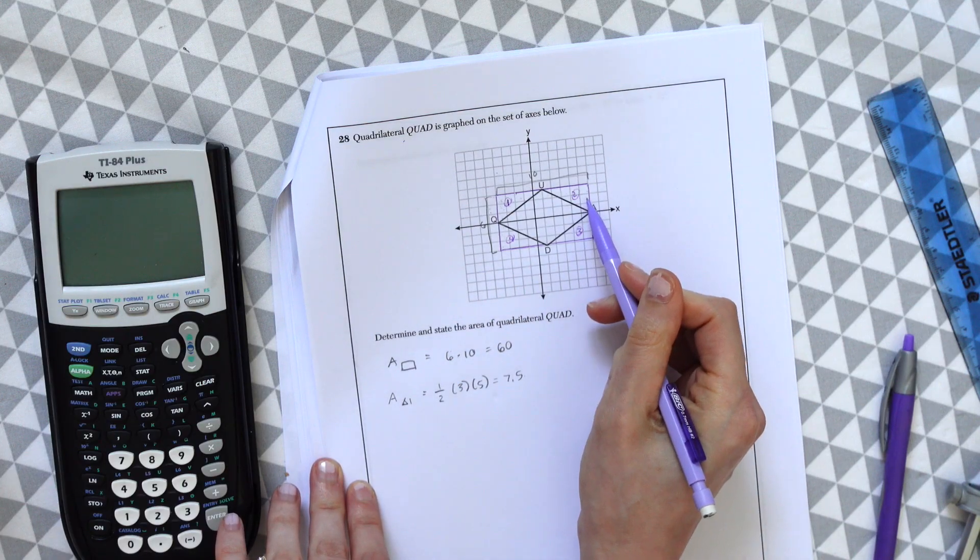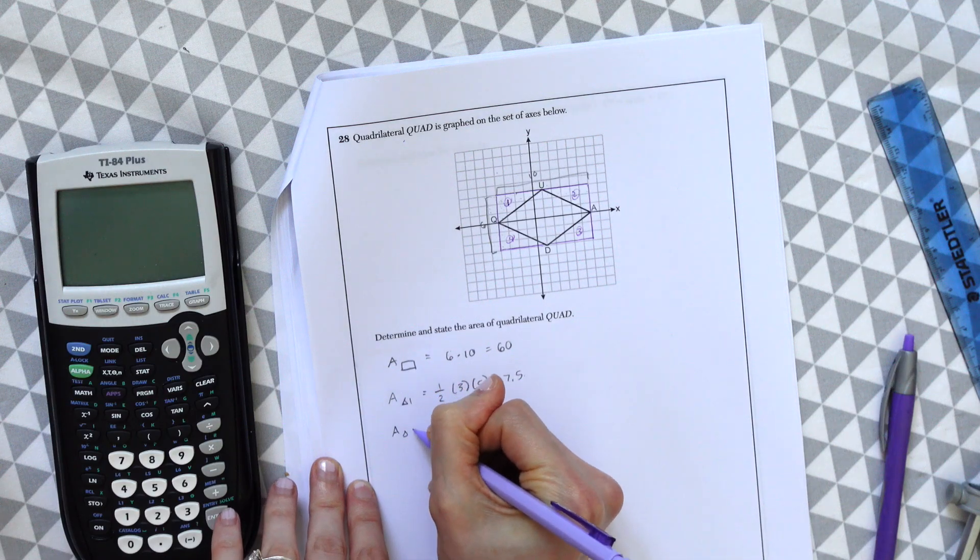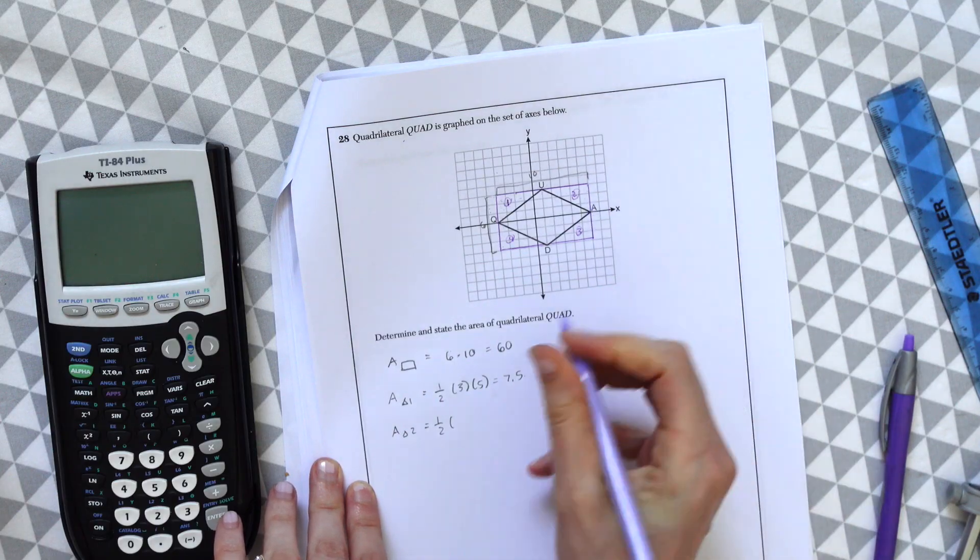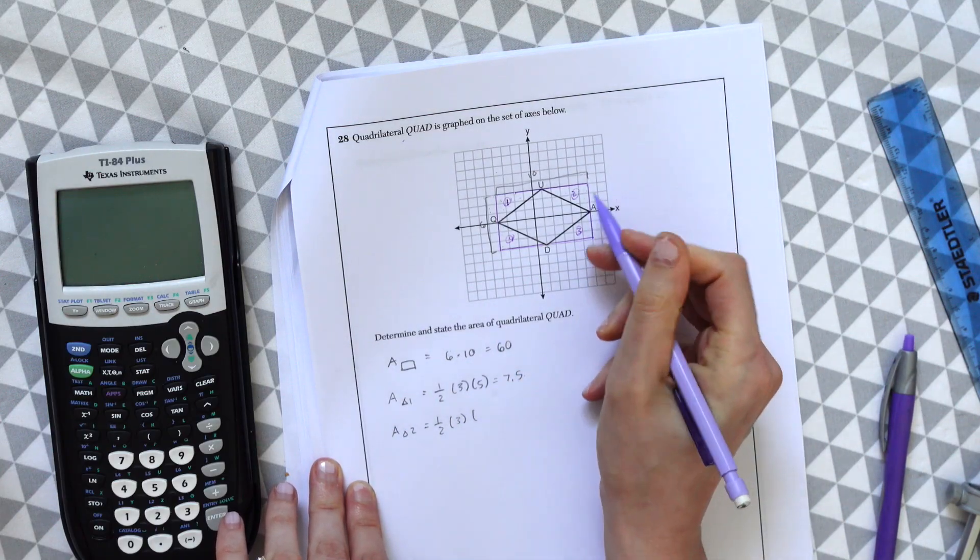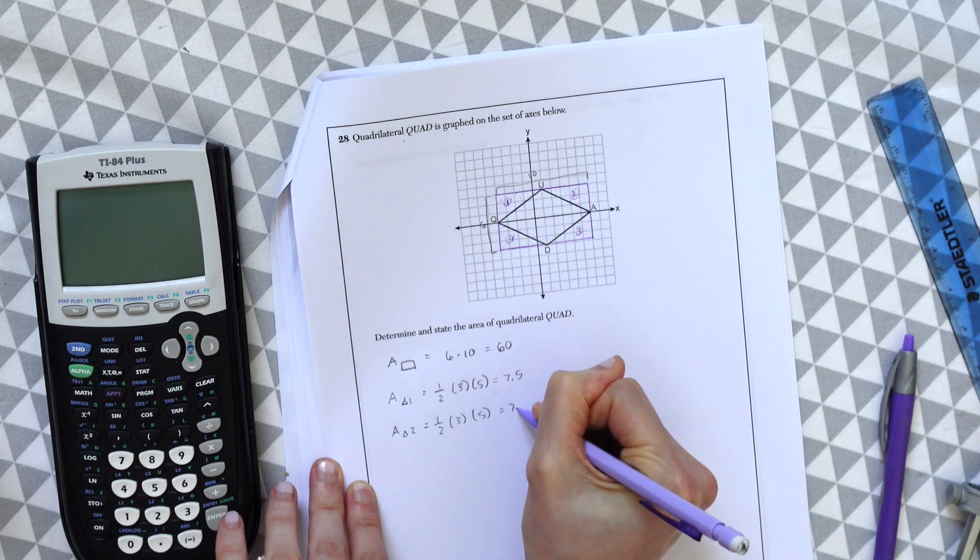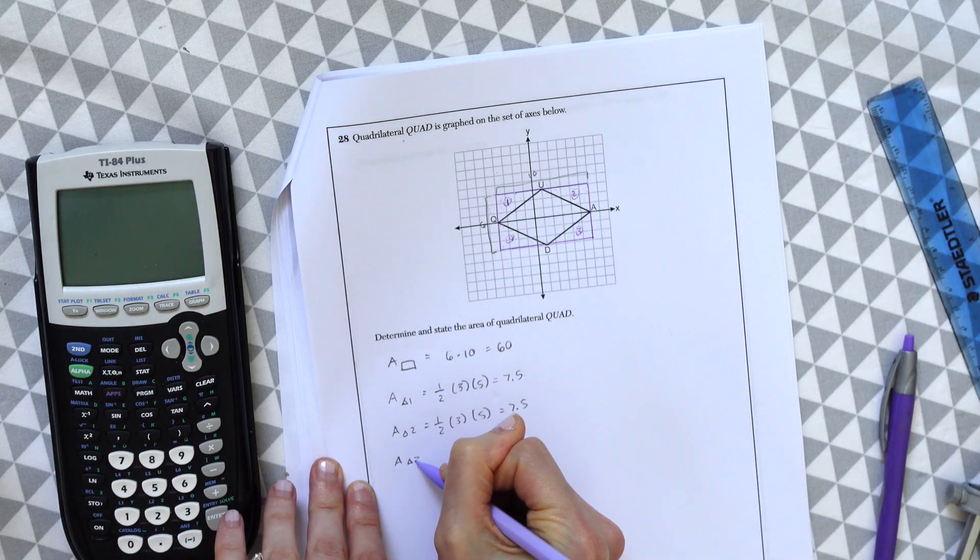Now let's try to find the area of triangle two. This is one-half base times height. We have one, two, three again times one, two, three, four, five. And again, we get 7.5.